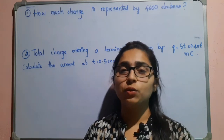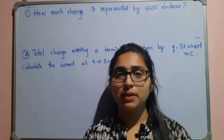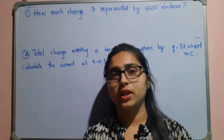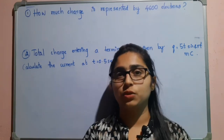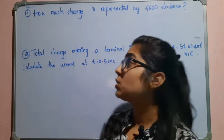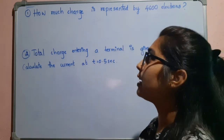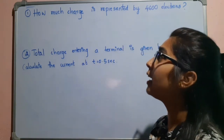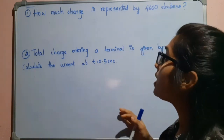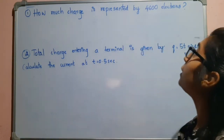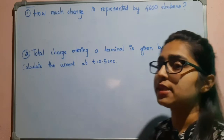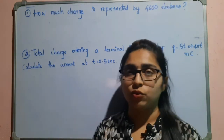Hello everyone. In this video let us solve some examples which are given in the SADECO textbook. The first example is: how much charge is represented by 4600 electrons?